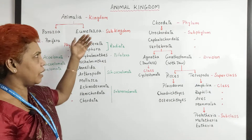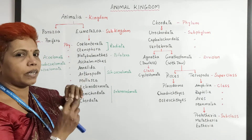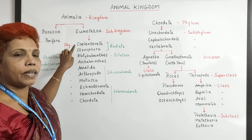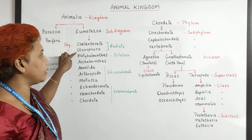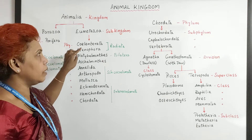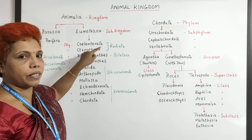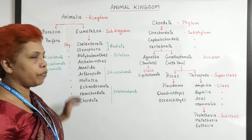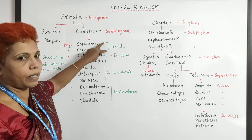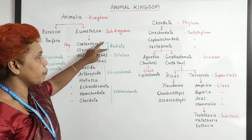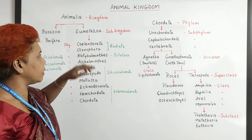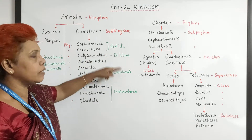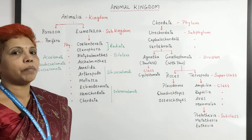Further classification goes on like this. Coelenterata and Ctenophora have radial symmetry in their body. Out of the 10 phylums, these two have radial symmetry. All the others, from Platyhelminthes to Chordata, are bilaterally symmetrical.